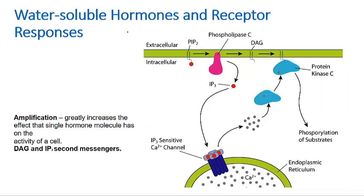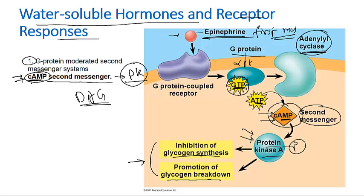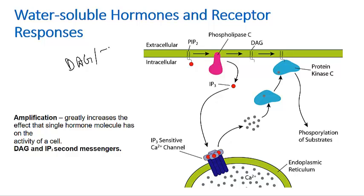There is another way this process can happen. In addition to the production of cyclic AMP, there is the diacylglycerol and inositol triphosphate (IP3) pathway. In this pathway, both diacylglycerol (DAG) and inositol triphosphate (IP3) act as second messengers. The process starts with a membrane-attached component known as PIP2 — phosphatidylinositol diphosphate — which is embedded in the cell membrane, along with another enzyme called phospholipase C.